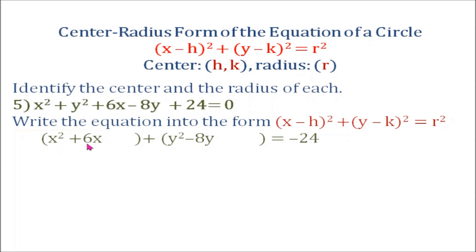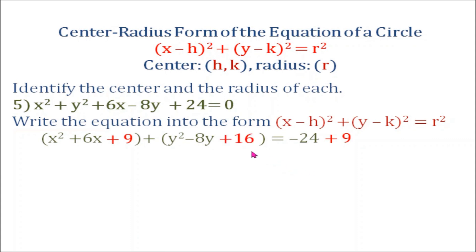For x squared plus 6x, we find half of 6 and square it: half of 6 is 3, and 3 squared is 9. So we add 9 on both sides. For y squared minus 8y, one half of 8 is 4, and 4 squared is 16, so we add 16 on both sides.